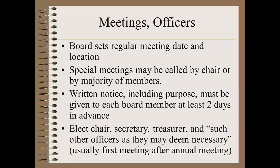The board sets a regular monthly meeting date and location. Special meetings can be called by the chair, or if the majority of the members request one, the chair has to call a meeting. For special meetings, there must be at least two days' notice in writing to each member of the board, and this has to state the purpose of the special meeting. At the special meeting, the only business can be what's stated in the notice. The board's bylaws should identify when election of officers will be held. Most often that's the first meeting after the new terms begin, which means either the April or May meeting, depending on when the board meeting date is.